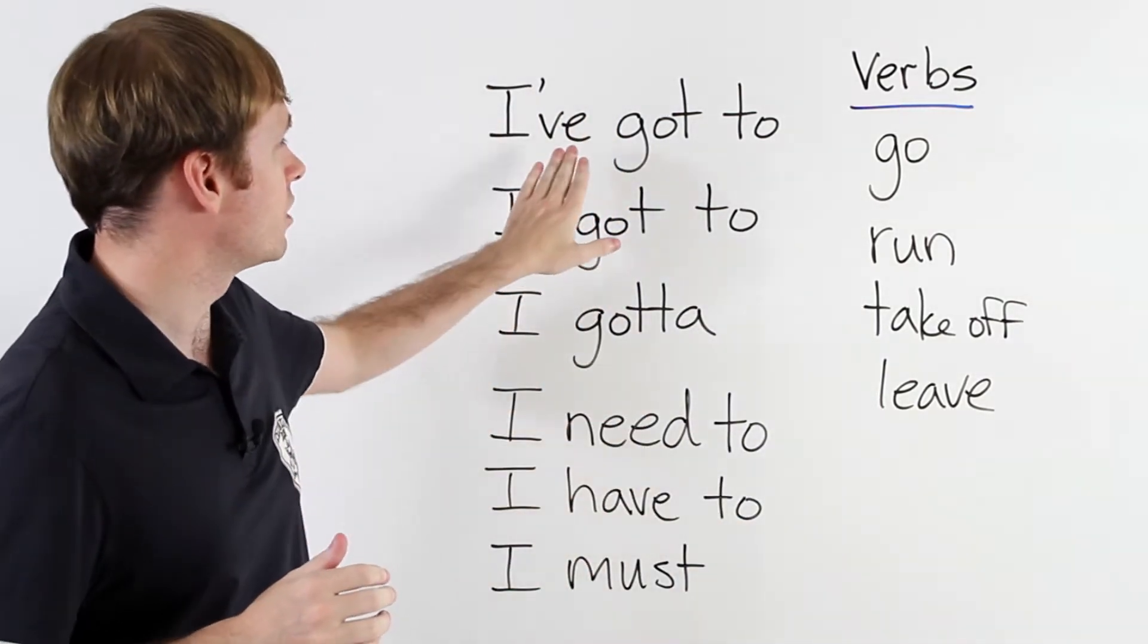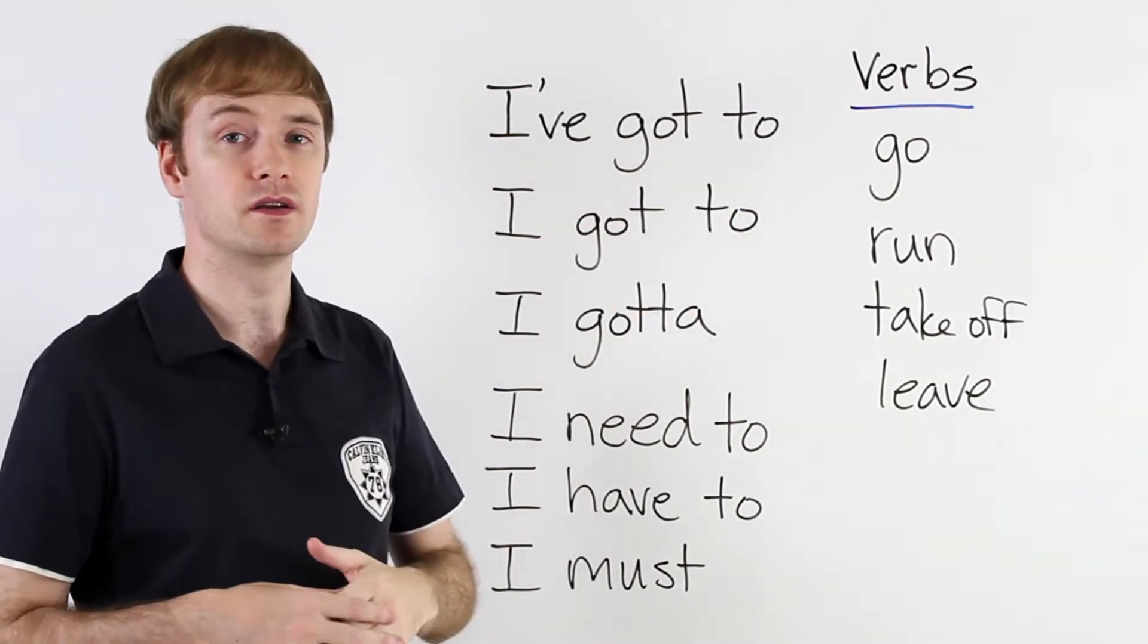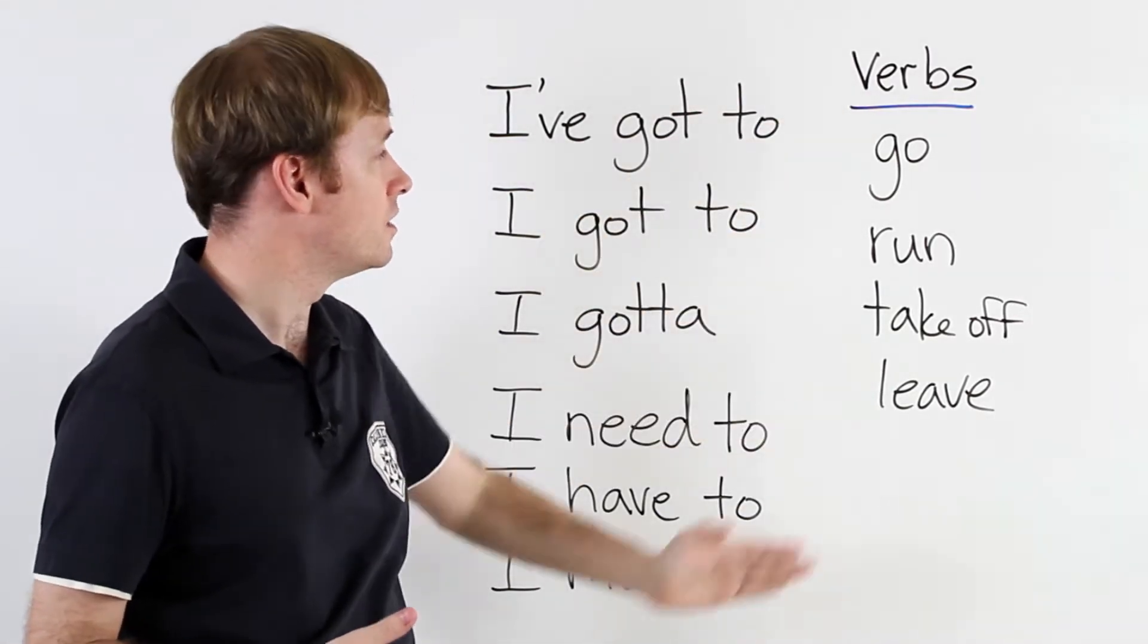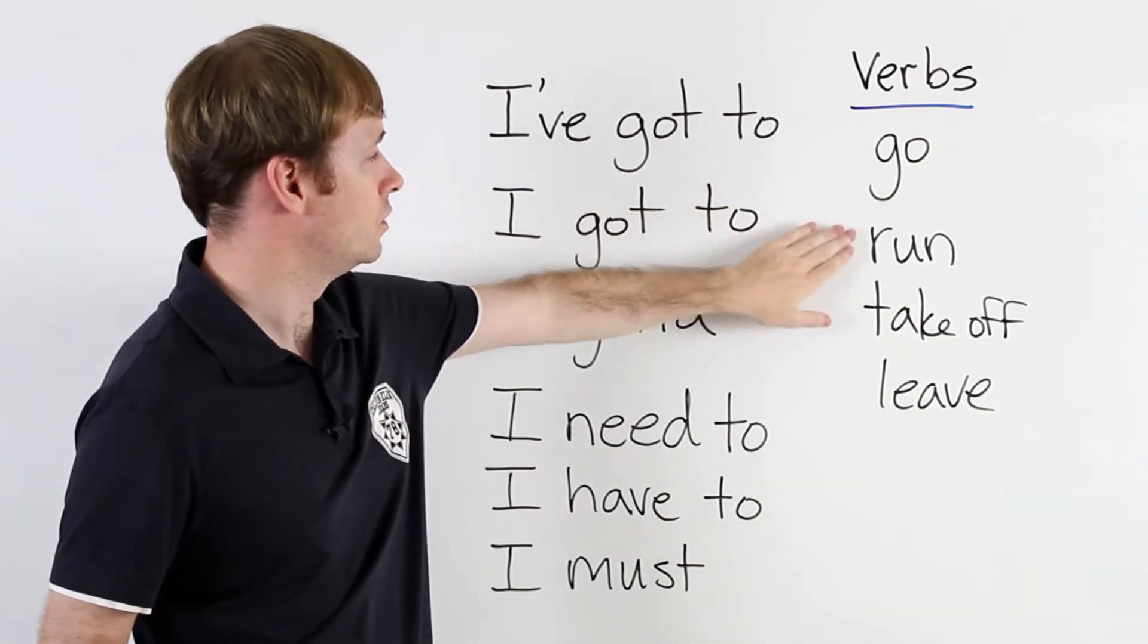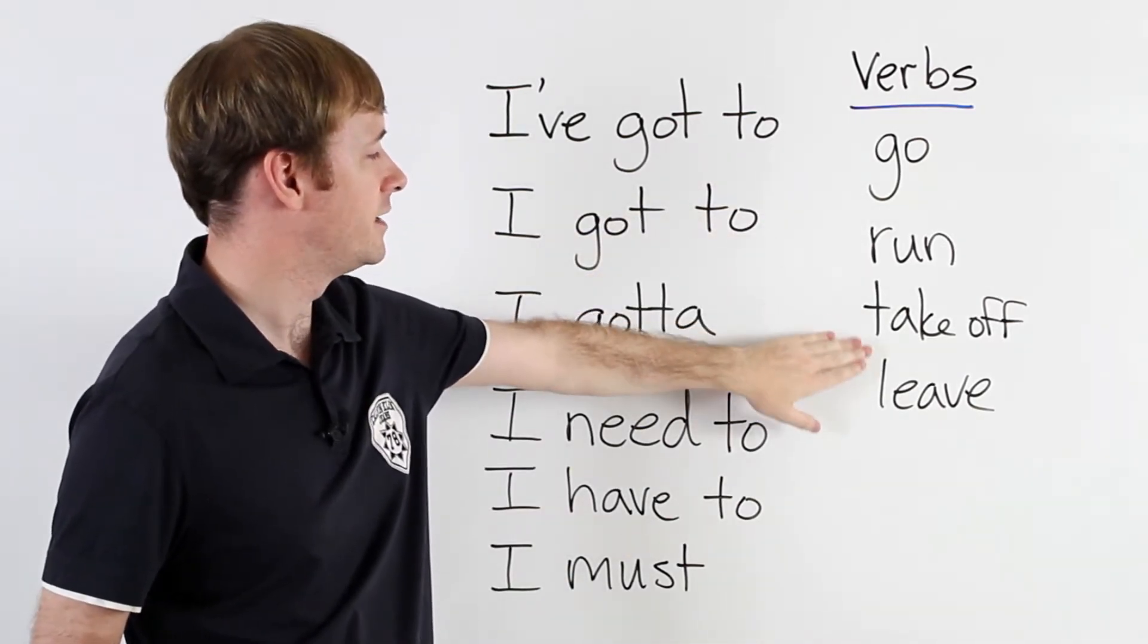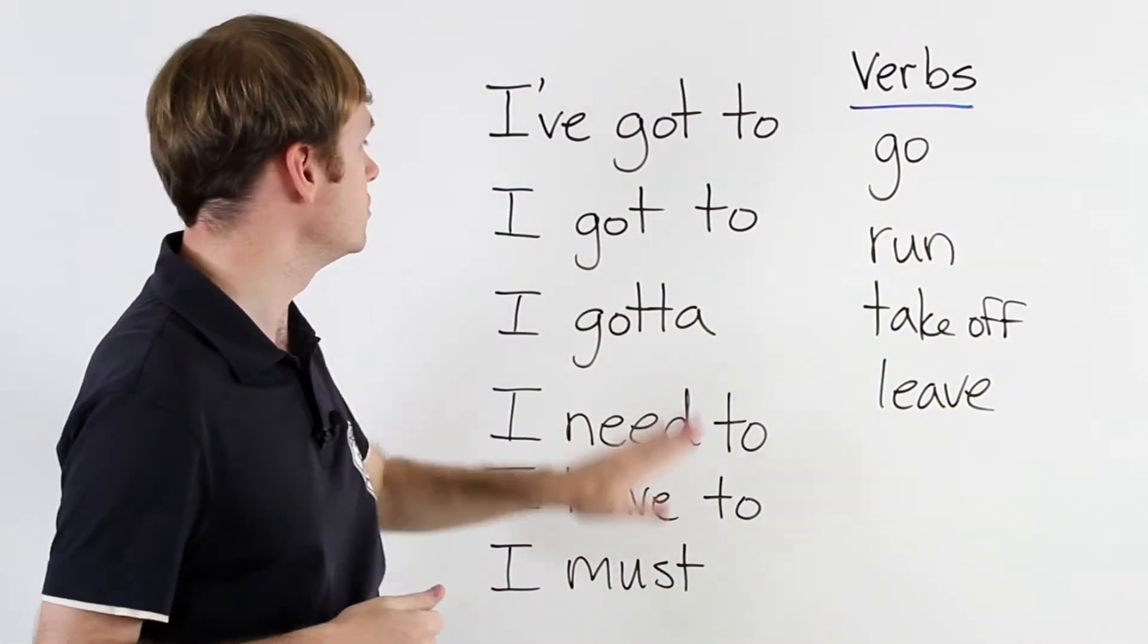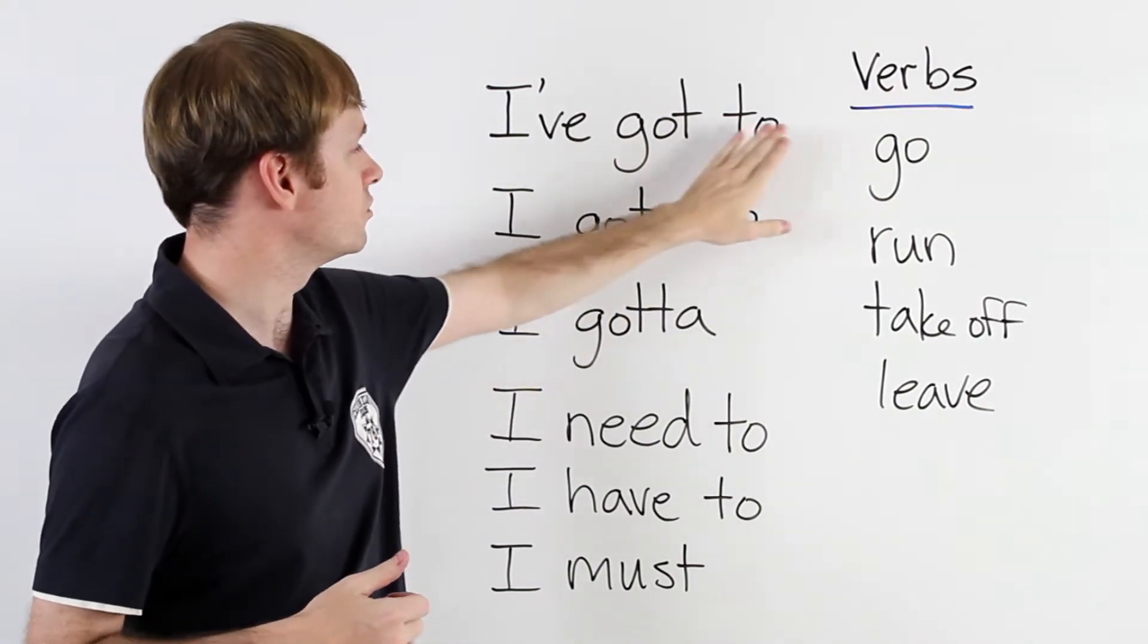And we'll start with this one. This is the most formal. I've got to. So you're going to say, I've got to, and you have to choose a verb. Now these are the most common verbs to use. Go, run, take off, leave. They all mean the same. Go. So you can say, I've got to go. That's ok. I've got to run.